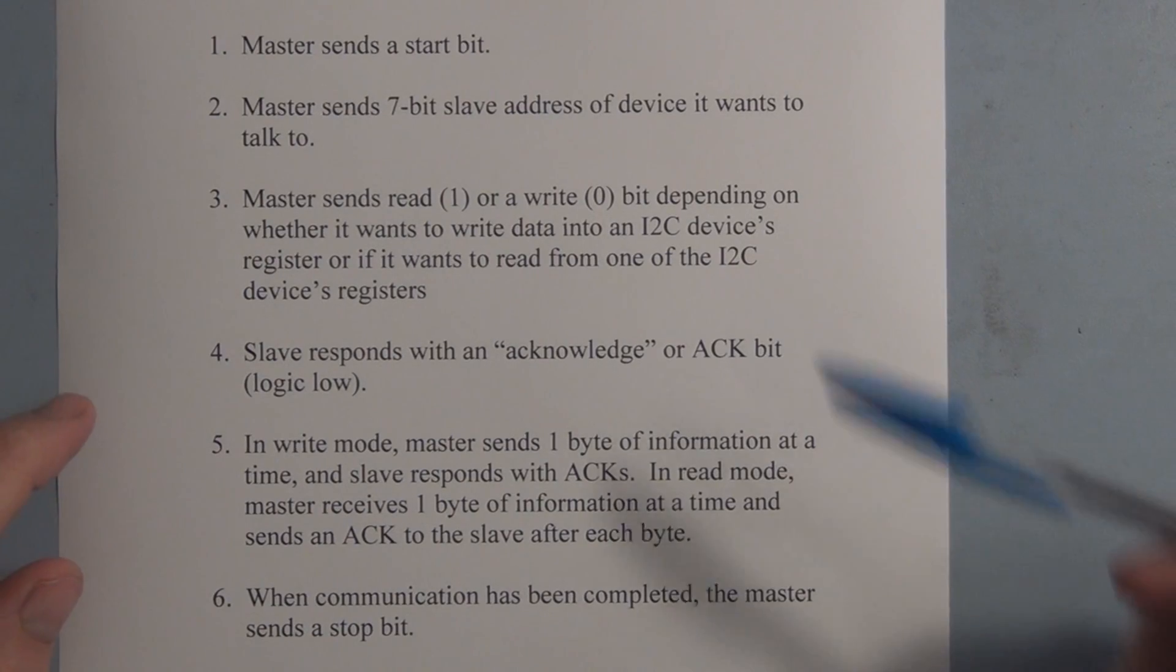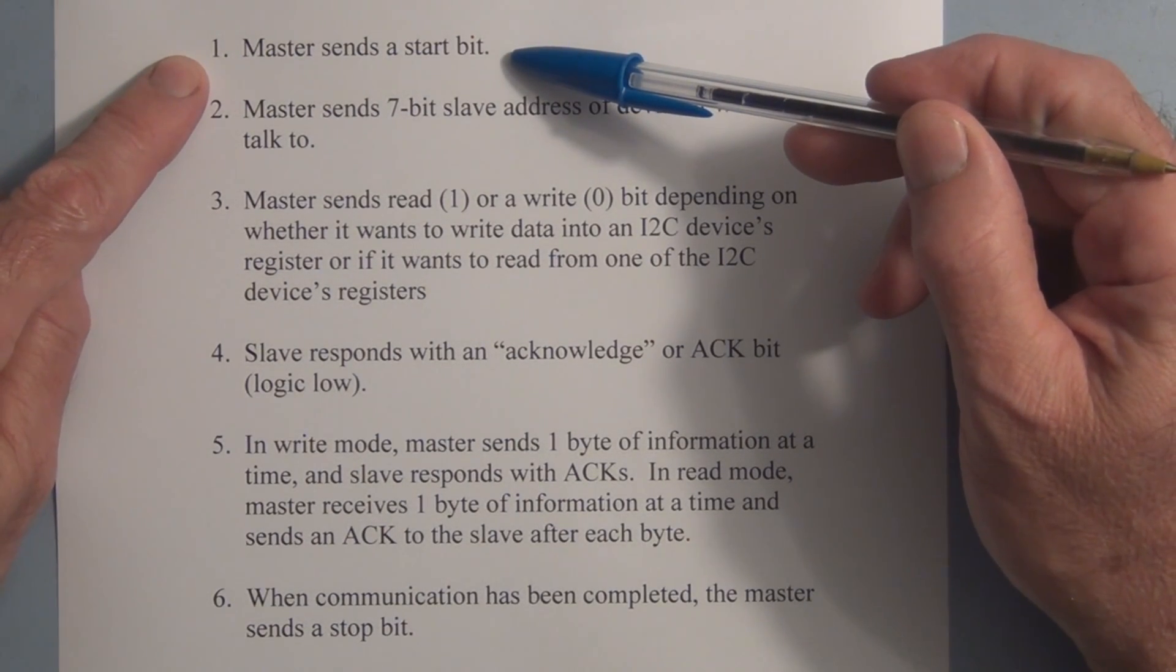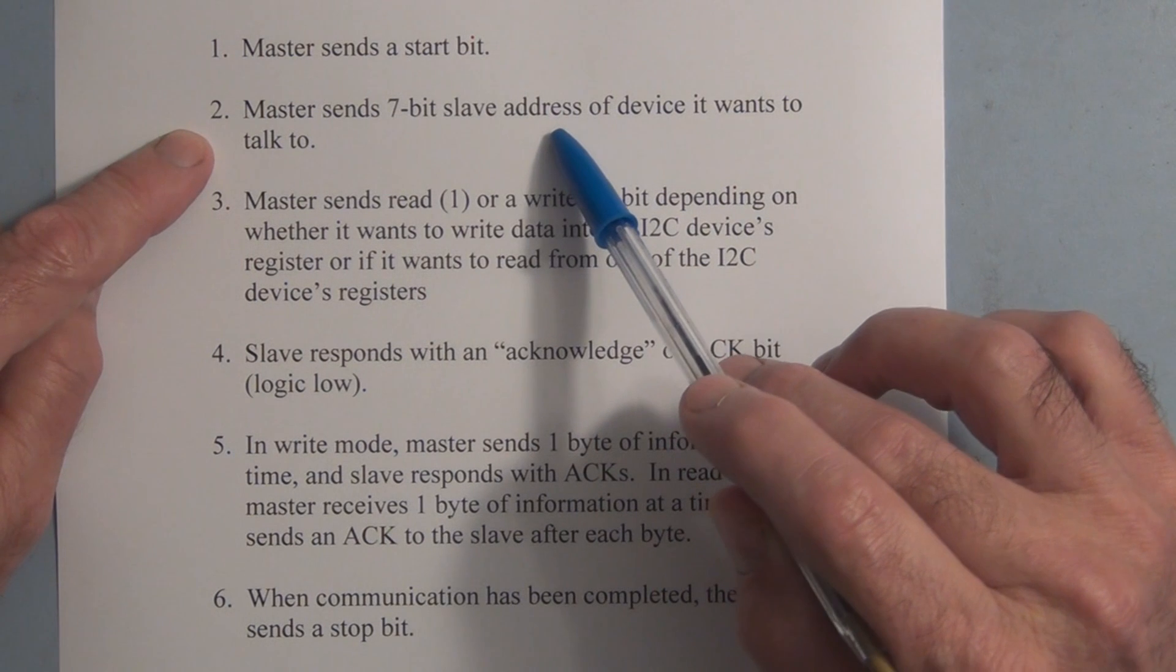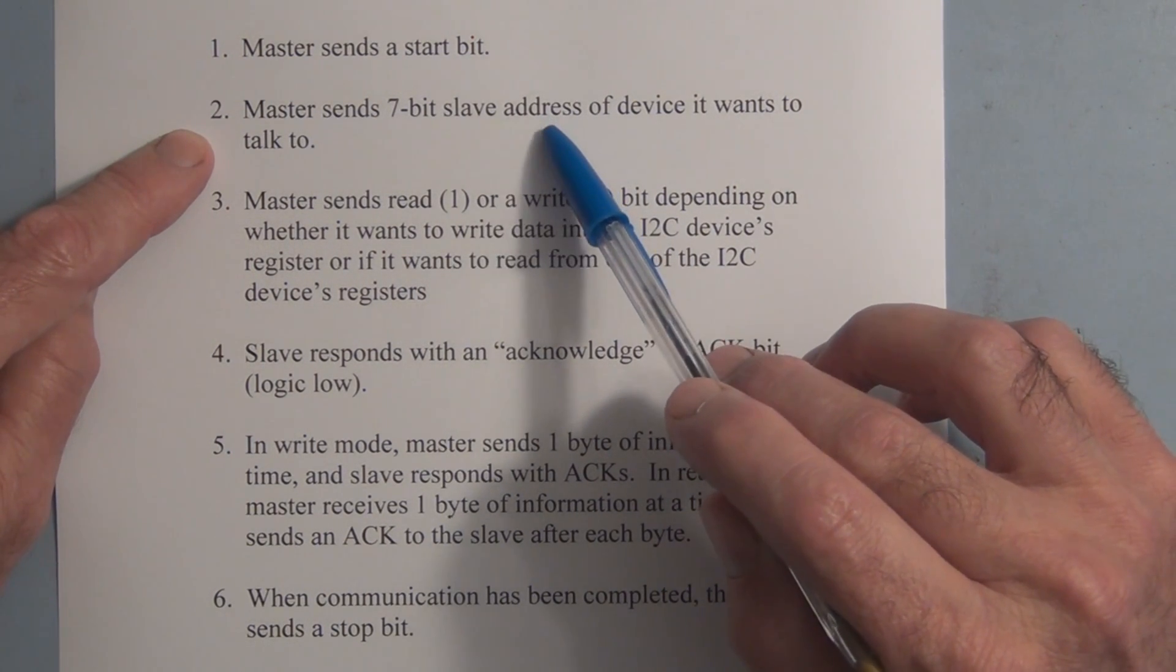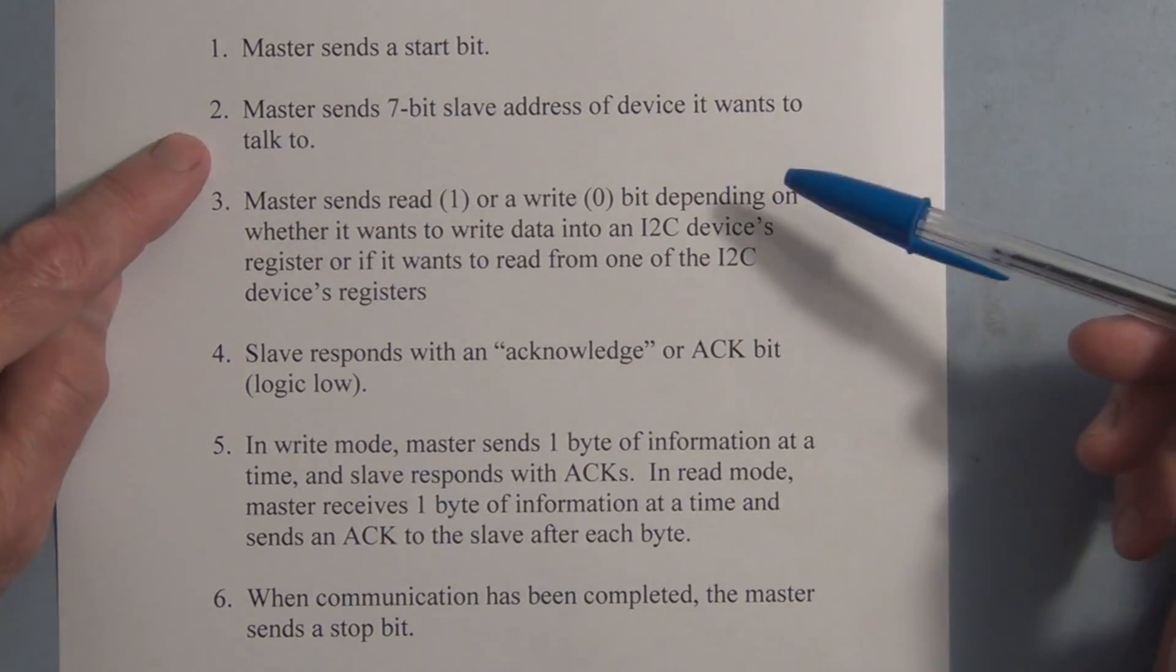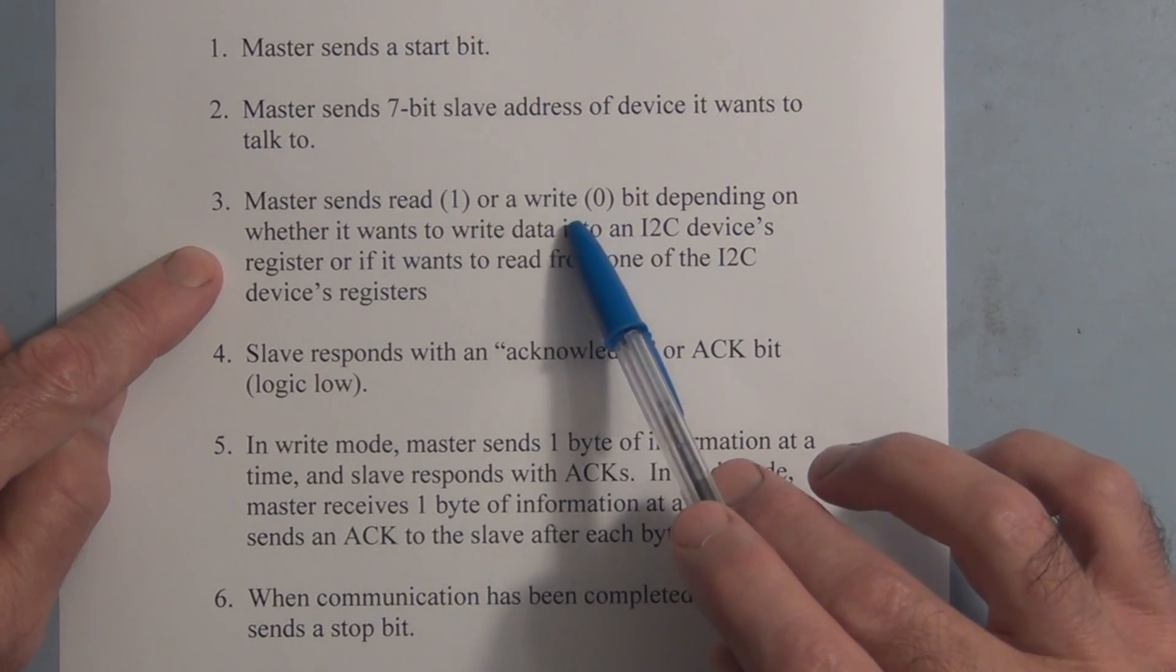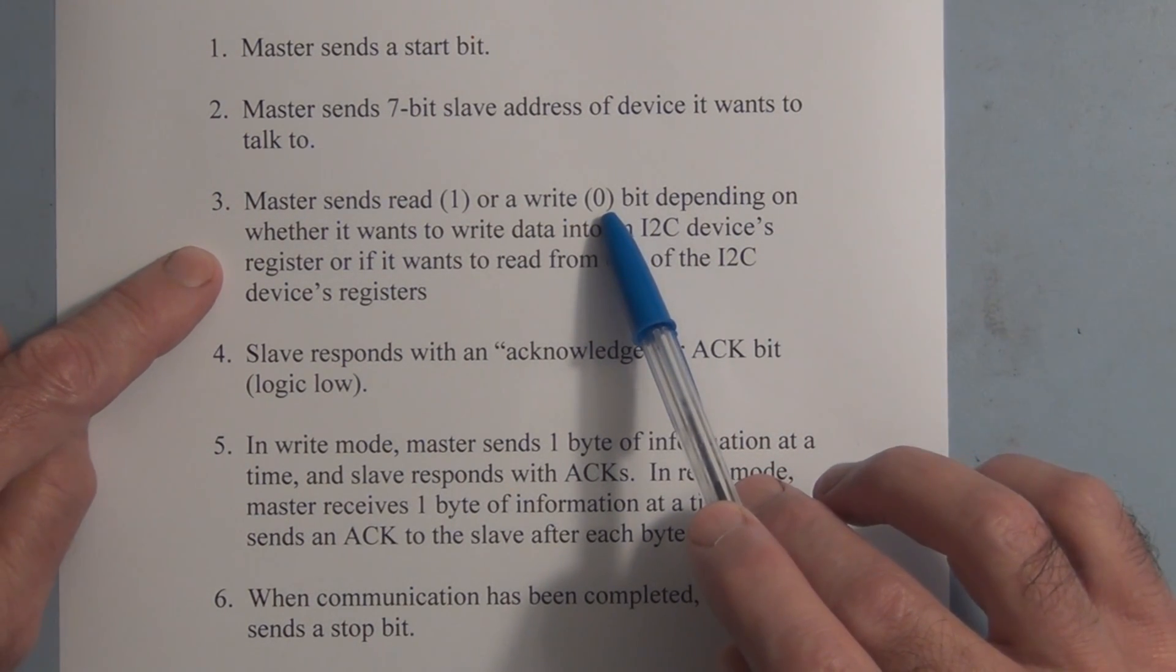So to summarize it in writing, the first step is for the master to send a start bit saying it wants to communicate with the slave. And then the master has to send a seven bit slave address. So in the I2C protocol, the slave addresses are seven bits. And then the master sends a read one bit if it wants to read or it sends a write zero bit if it wants to write to the slave.